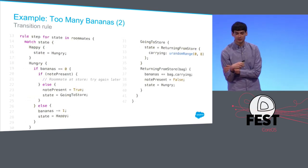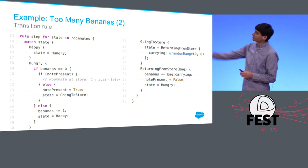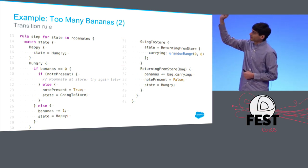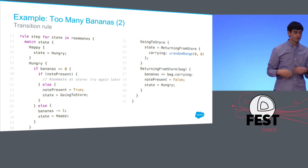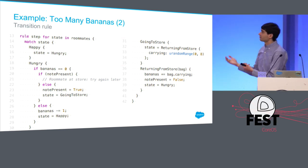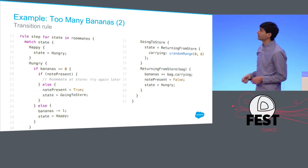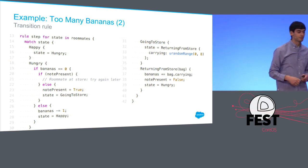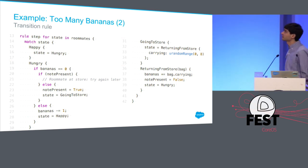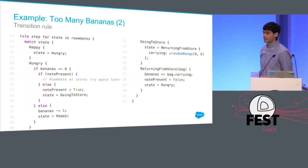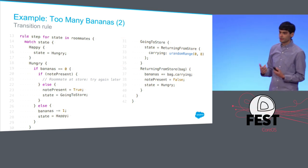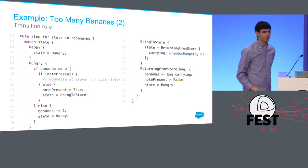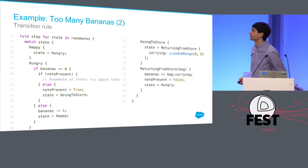This model has one transition rule. If you're happy, you can go hungry. If you're hungry, there are no bananas, and there's no note, then you go to the store. If there are bananas, you eat one and you're happy again. If you go to the store, you come back with a random number of bananas. And if you come back from the store, you add your bananas to what you've got at home, remove the note, go hungry, and you'll probably pick up a banana shortly — but other roommates can eat it too.